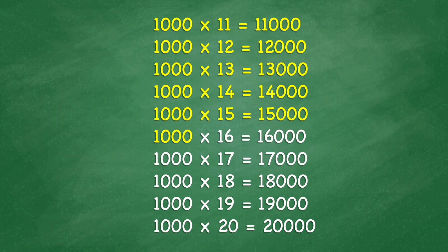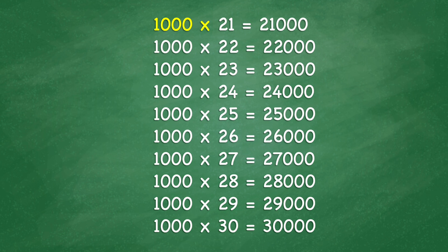1,000 times 15 equals 15,000. 1,000 times 16 equals 16,000. 1,000 times 17.